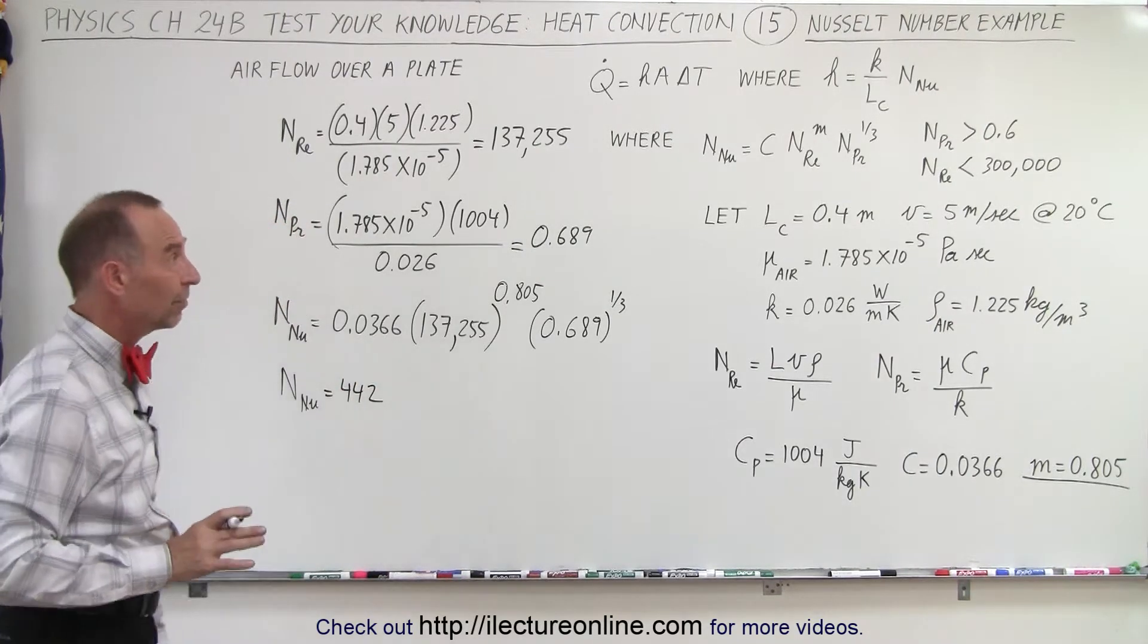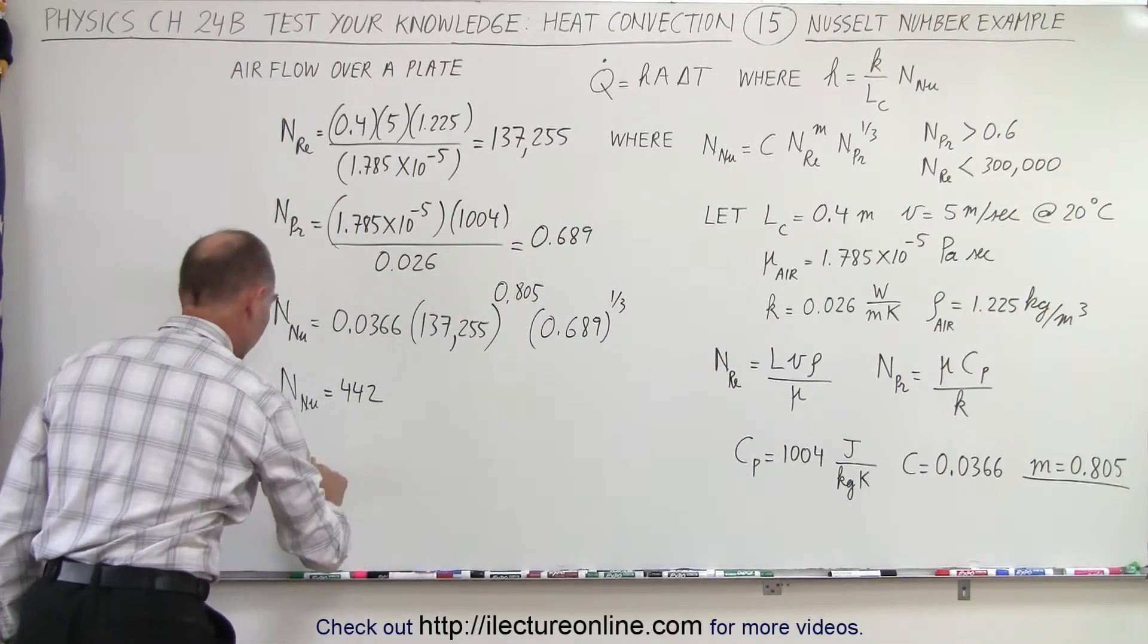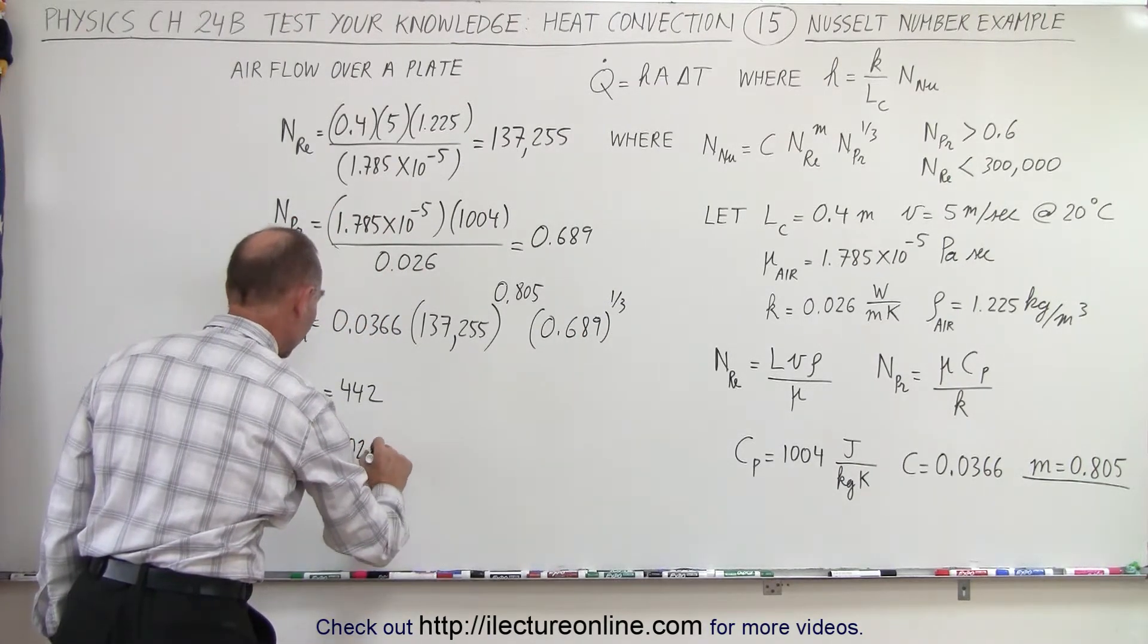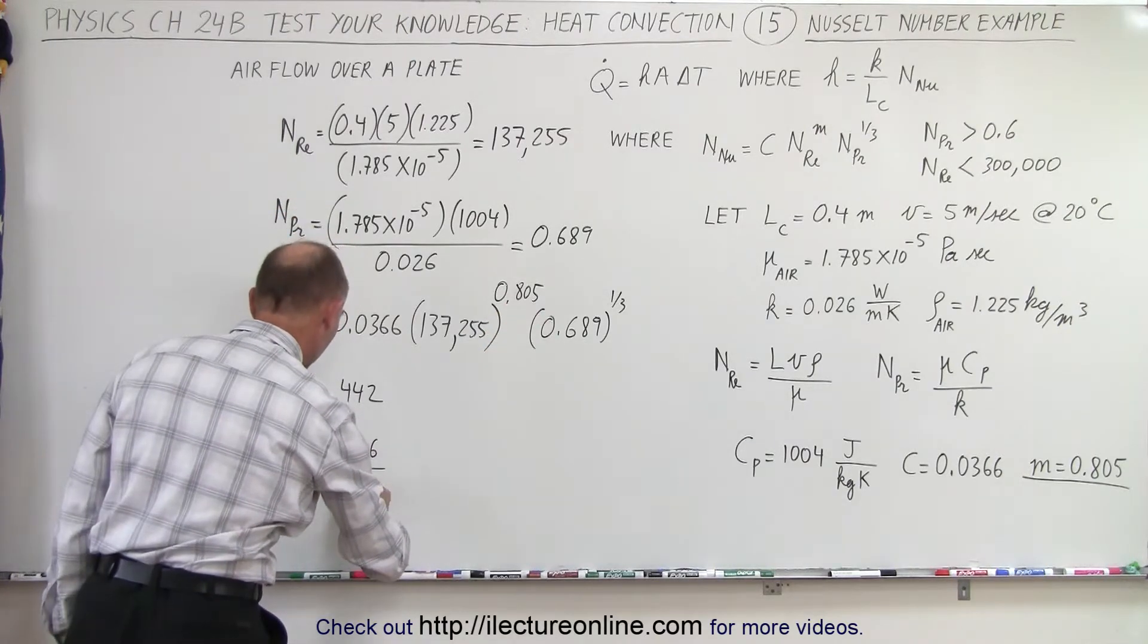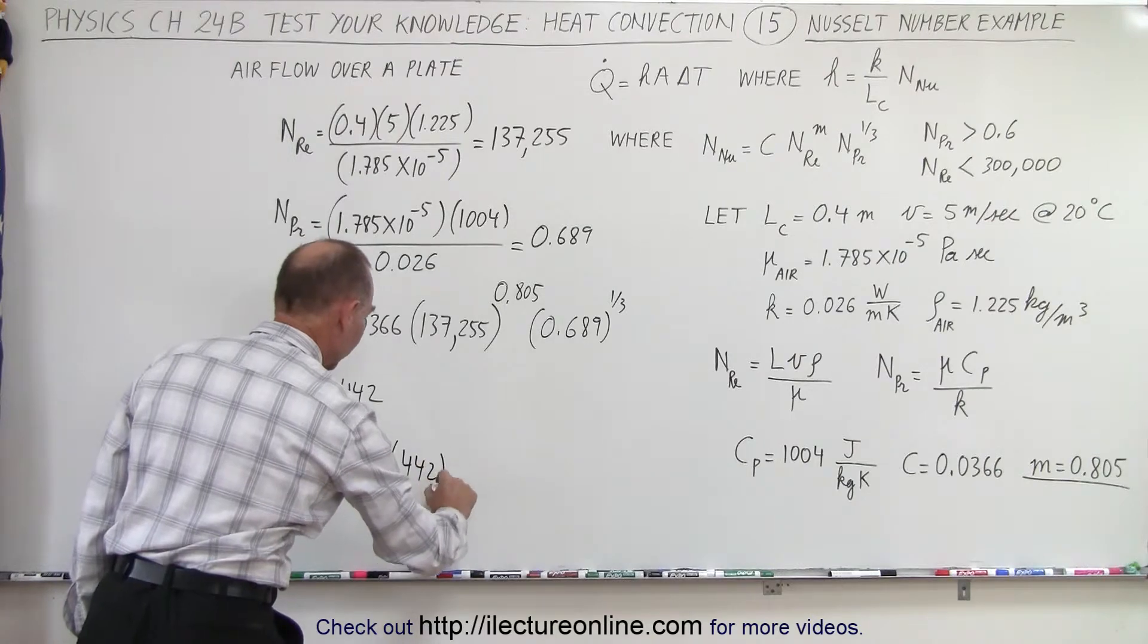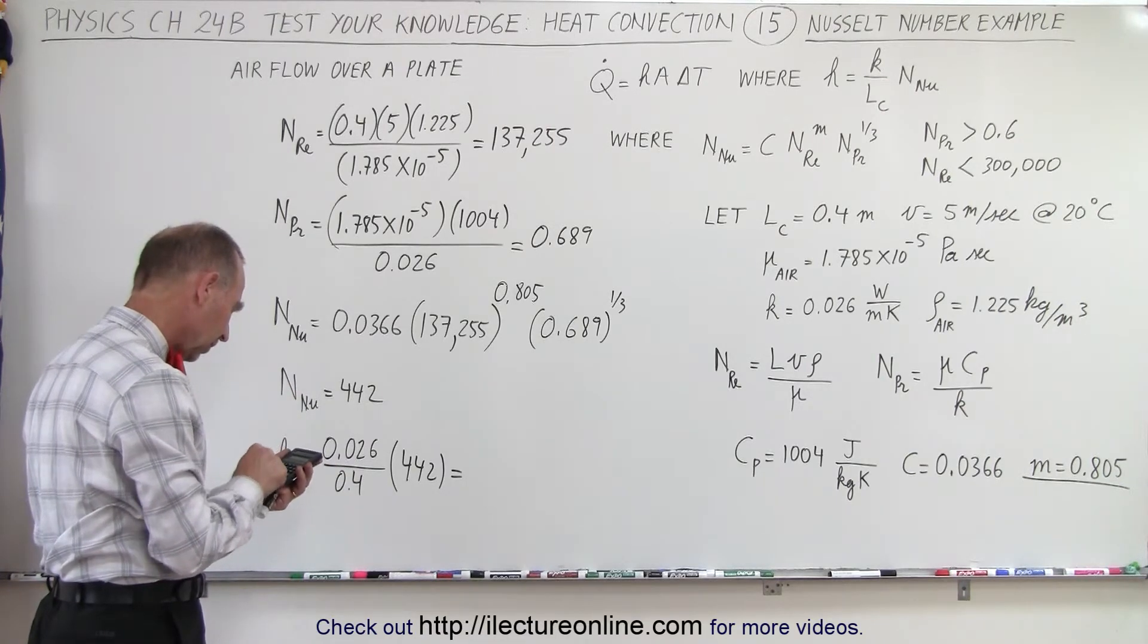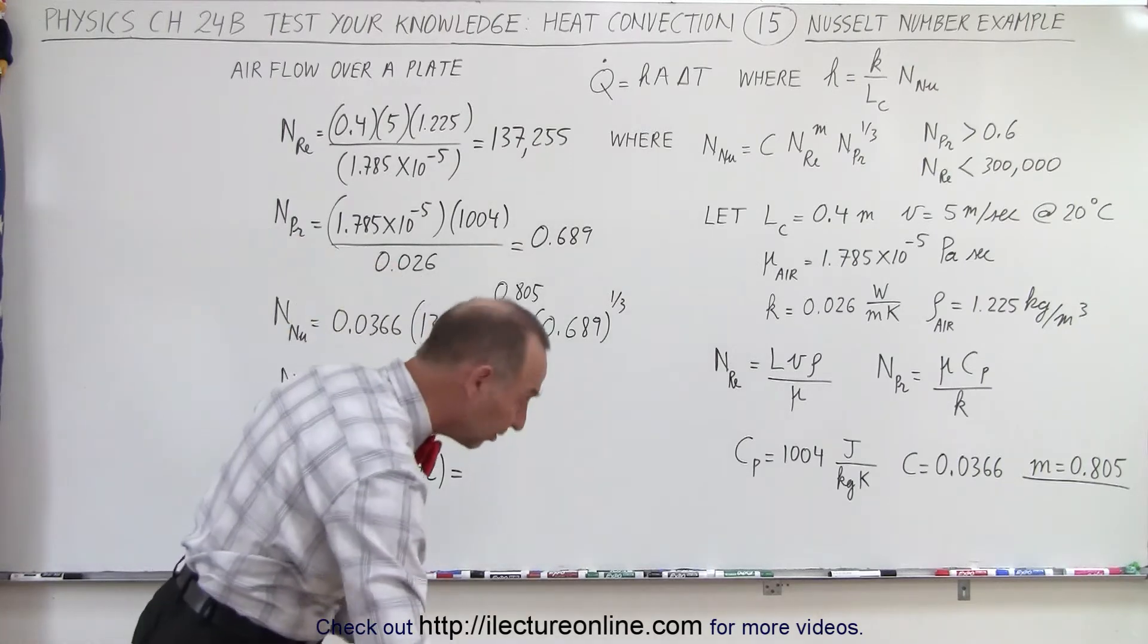Now, to get the transfer coefficient H, we multiply it times K. K is going to be 0.026 divided by the characteristic length, which we said was 0.4, multiply it times the Nusselt number of 442. And so, times 0.026 divided by 0.4 equals, we get 28.7.